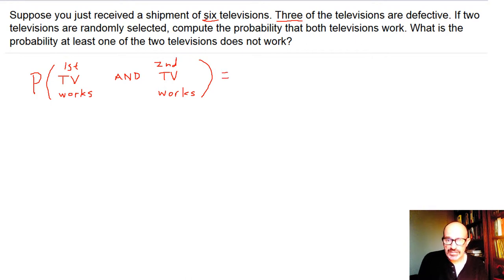So this is probability first TV works. What does first mean? Well, you have this shipment, and you're pulling them out of the truck, and the first one you pull out could be considered the first, times the probability that the second TV works given that the first TV worked.